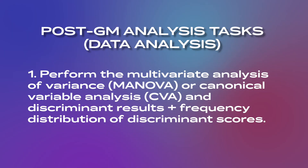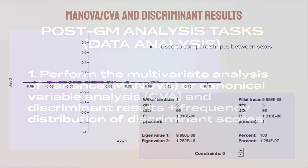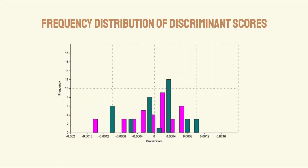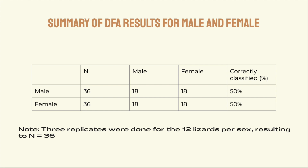Now we move on to the last part of the study: data analysis. Step one: perform the multivariate analysis of variance, or canonical variable analysis and discriminant results, plus frequency distribution of discriminant scores. This is a series of statistical analyses to compare shapes between species. In our sexual dimorphism study, these analyses categorized shapes as male or female.